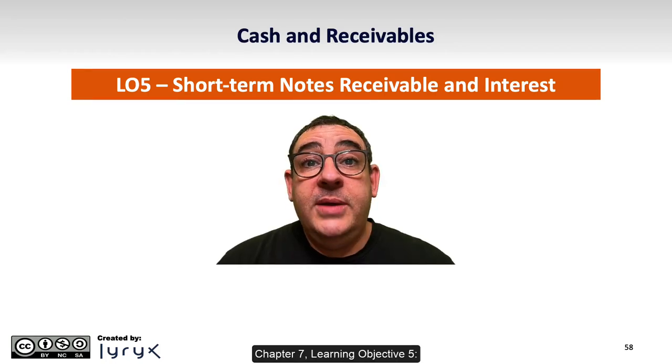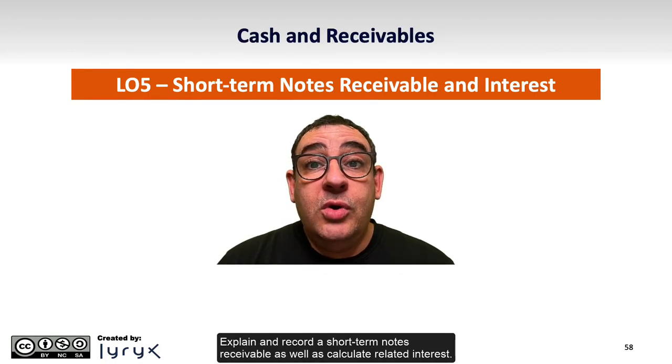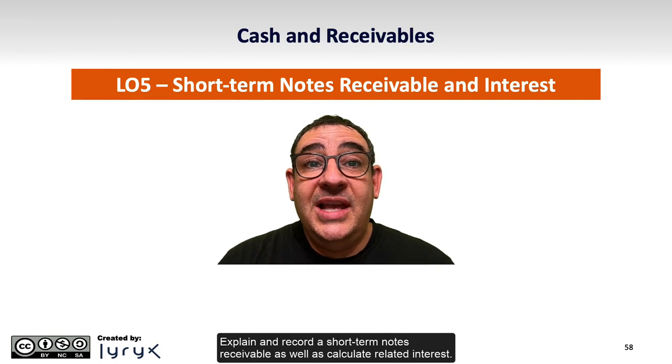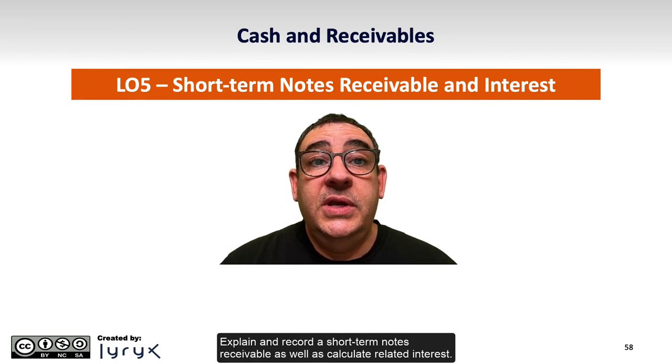Chapter 7, Learning Objective 5: Explain and Record a Short-Term Notes Receivable as well as Calculate Related Interest.